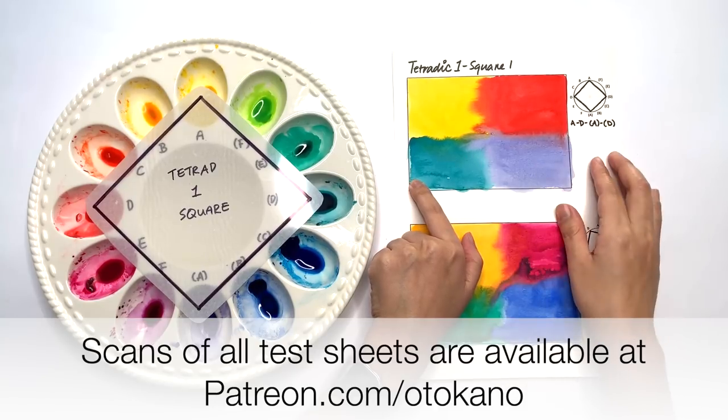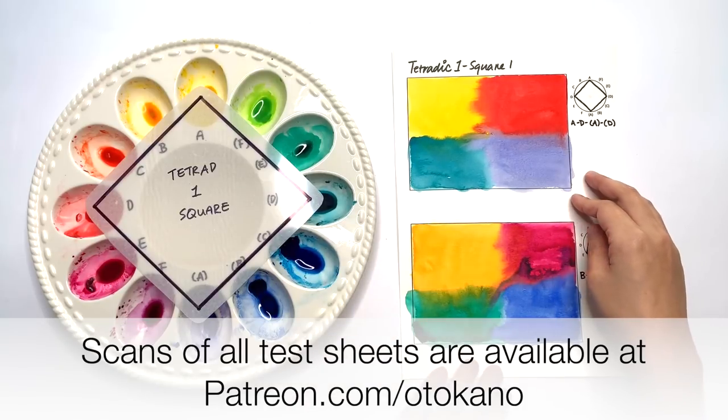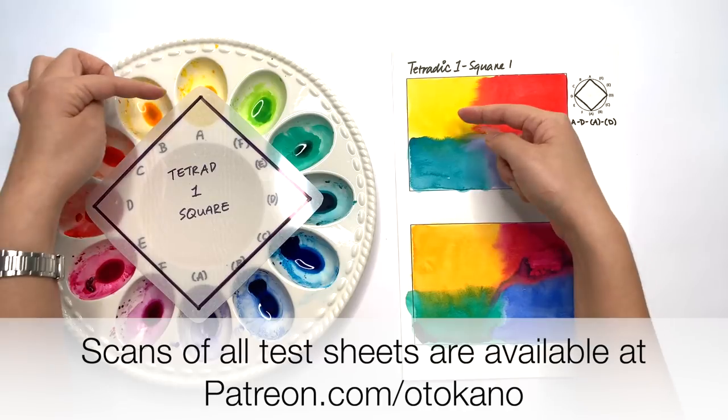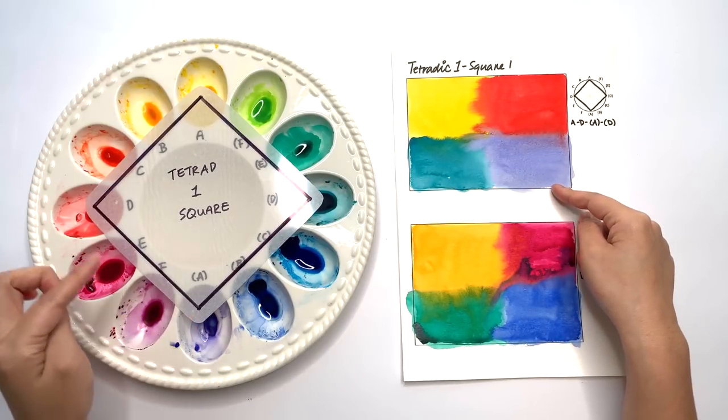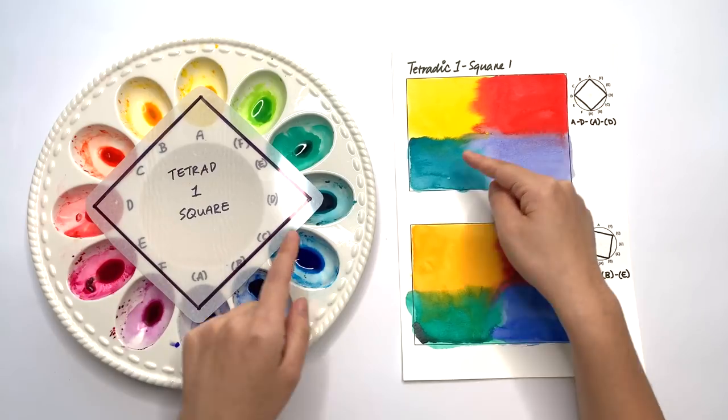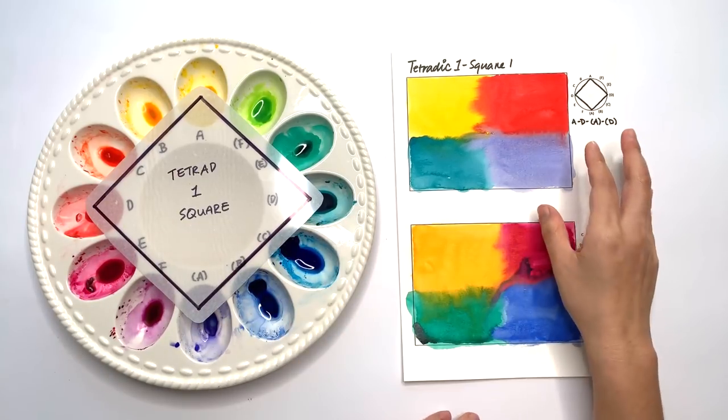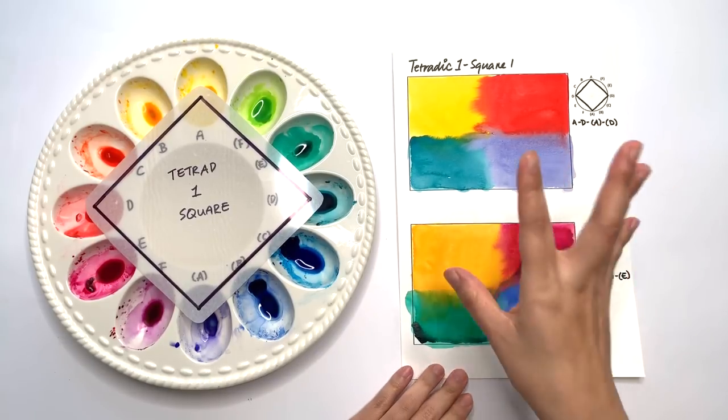You can see the four colors working together on their own. So first we have this setup where we have the A color, A bracket color, D and D bracket. Obviously you don't have to lay it out like this, you can lay it out in lots of different ways.